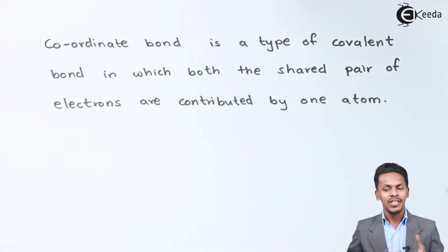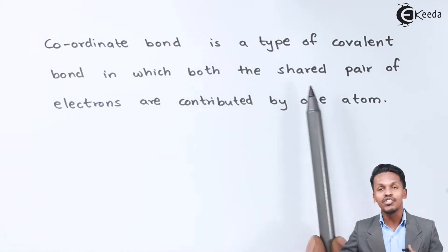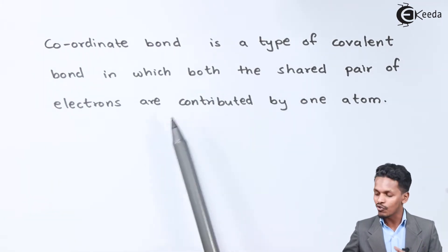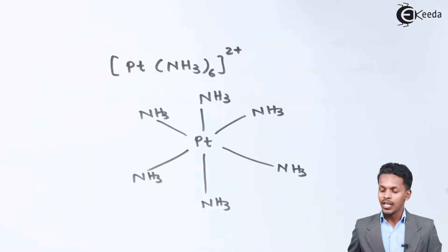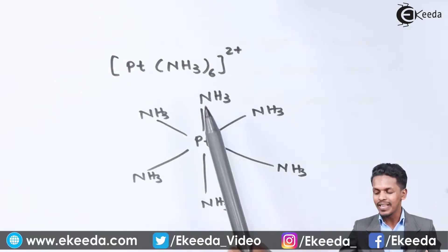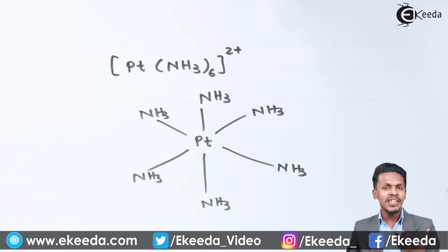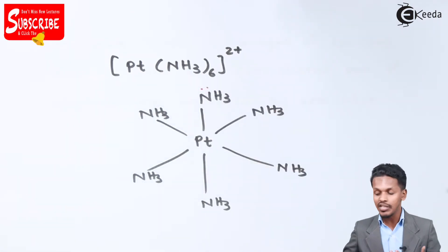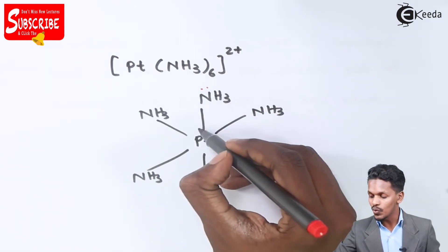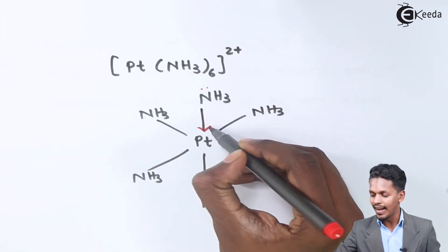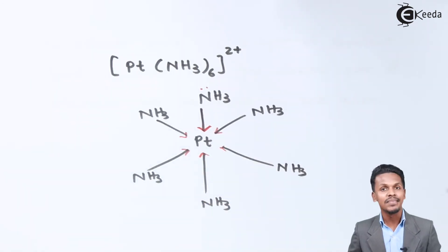The bond in this compound is known as a coordinate bond. A coordinate bond is a type of covalent bond in which both the shared pair of electrons are contributed by one atom only. In the example, the ammonia group surrounds the platinum atom. The nitrogen consists of a lone pair of electrons, and that lone pair is donated toward the platinum.